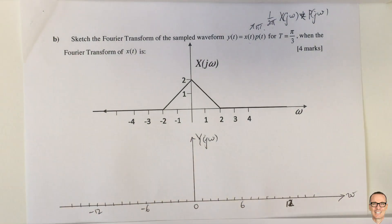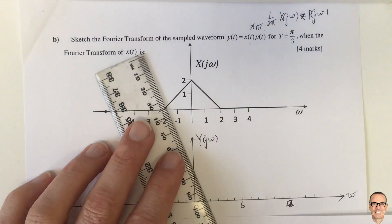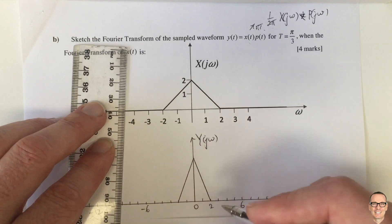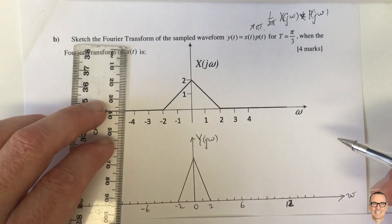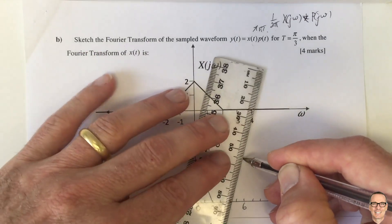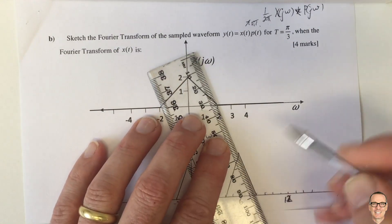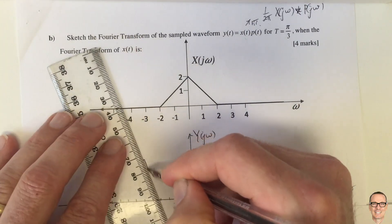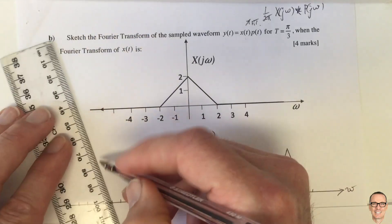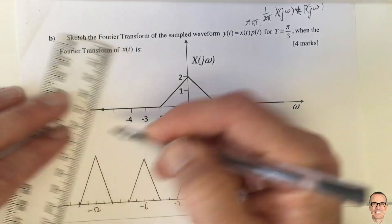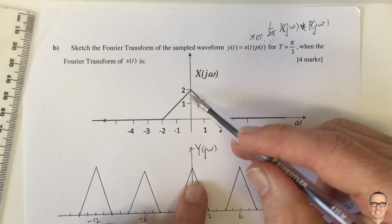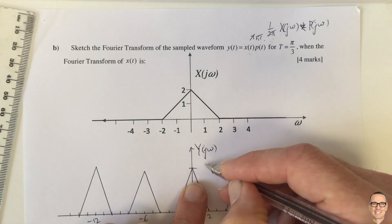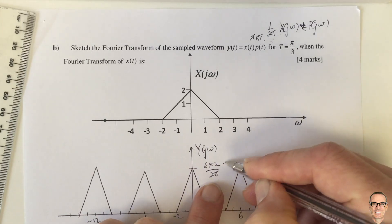So we will have our function appearing centered at the delta function at 0. Then centered at the delta function at 6, at 12, and at minus 6 and minus 12. This is the Fourier transform of our sampled function. The height is (1/2π) times the height of X times the height of P. The height of P was 6 and the height of X was 2, giving us 6×2/2π, which equals 6/π.